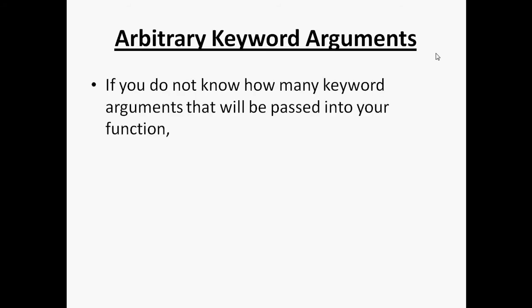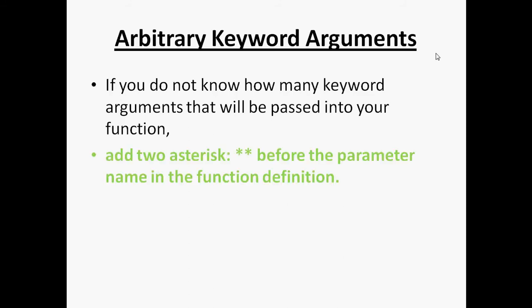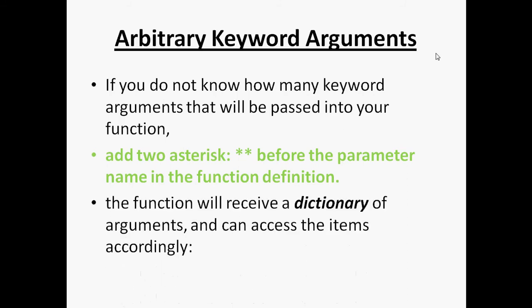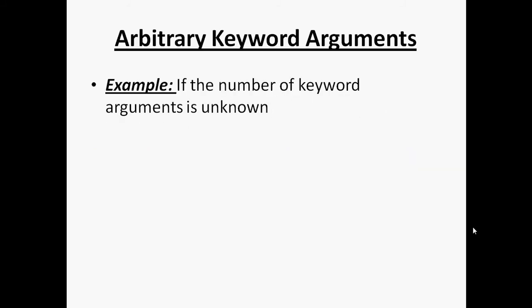Arbitrary keyword arguments. If you don't know how many keyword arguments will be passed into your function, just add two asterisks before the parameter name in the function definition. The function will receive a dictionary of arguments and can access the items accordingly. To learn about dictionaries you can refer to the Dictionaries in Python video. Let's take an example where the number of keyword arguments is unknown.